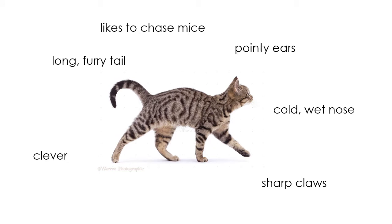Here are the labels I used for my cat last week. You can see I've done some things about what the cat looks like — he has a long furry tail, pointy ears, a cold wet nose. I've also thought about some things about a cat: they're clever, they like to chase mice. I'm going to use those things today to write my advert.